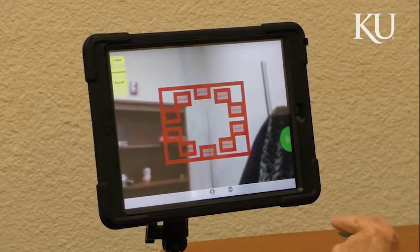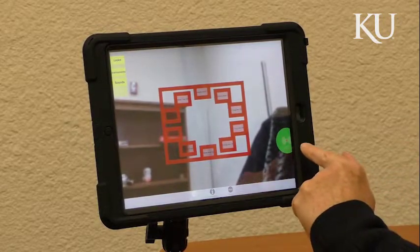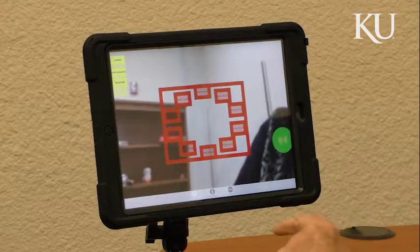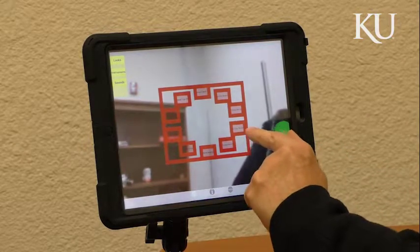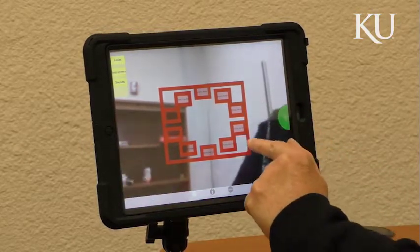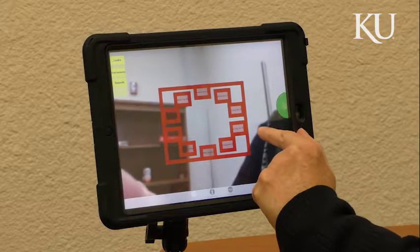So when I move the cursor, which is this little ball here, when I move it into one of those squares, it'll play the instrument that we've put into that little box.